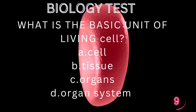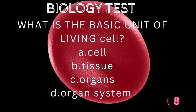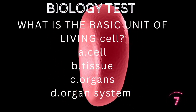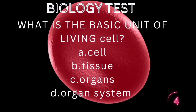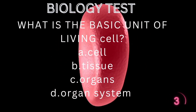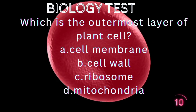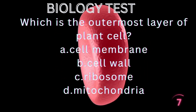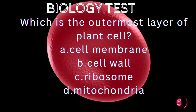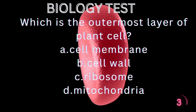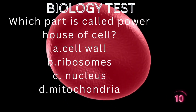What is the basic unit of a living thing? Cell, tissue, organ, or organ system. Which is the outermost layer of a plant cell? Cell membrane, cell wall, ribosomes, or mitochondria. Which part of the cell is called...